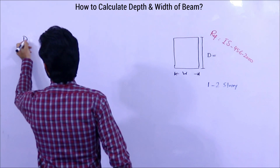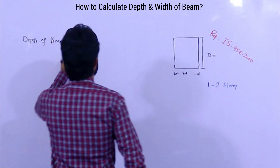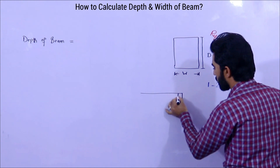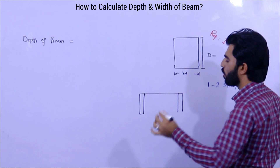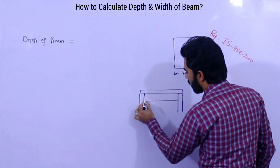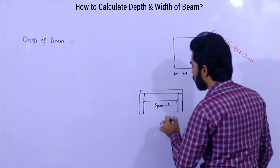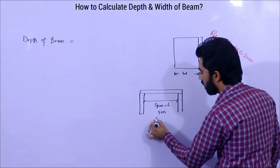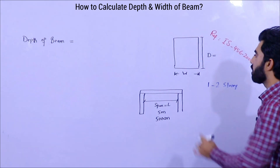First of all, let's calculate the depth of the beam. To do this, we need to know the span. As you can see, this is one column and this is the second column. The distance from here to here is the length or span, which is L. For example, I have a length of 5 meters or 500 centimeters.